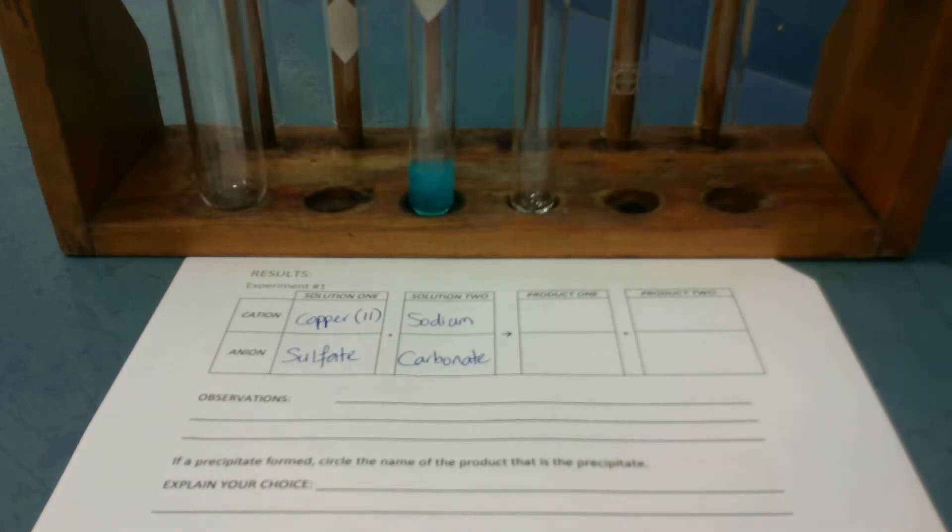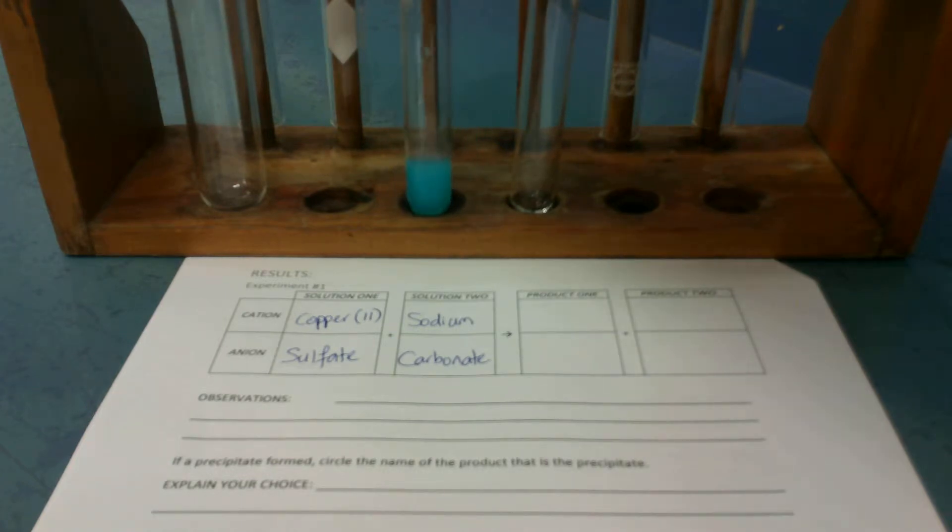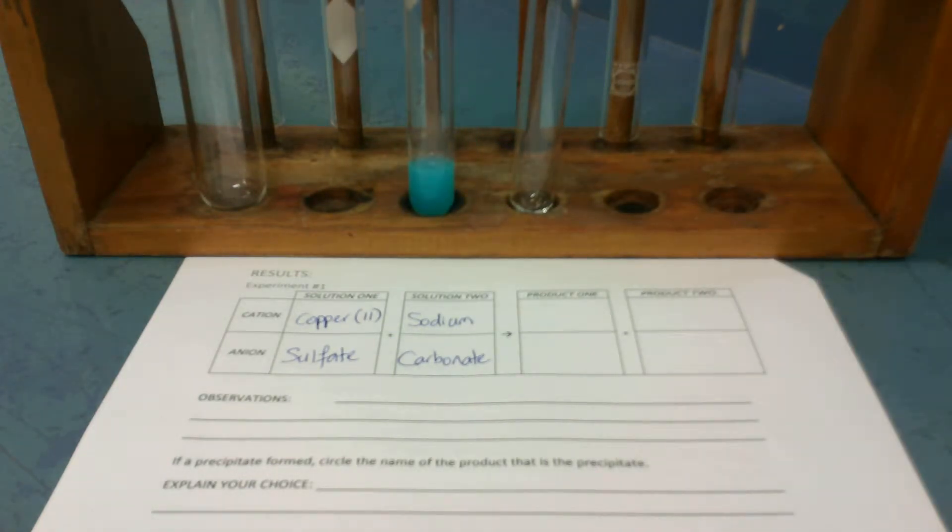So there we go. And we see that it goes a bit cloudy. So that means it's made a solid. So it's going from two solutions, clear things, to having it go cloudy, which means there is a precipitate. So we know there is a precipitate.